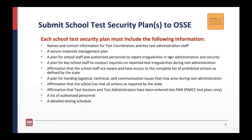Each school test security plan must include the following: names and contact information for test coordinators and key test administration staff; a secure materials management plan; plans for school staff and authorized personnel to report irregularities; a plan for key school staff to conduct inquiries on reported test irregularities; affirmation that school staff are aware of the complete list of prohibitive actions; a plan for handling logistical and technical communication issues; affirmation that the school has met required state actions; and affirmation that test sessions and test administrators have been entered into Pearson Access Next.